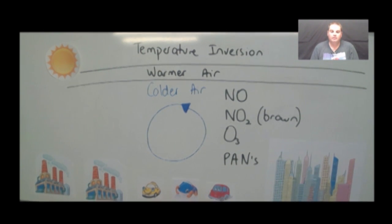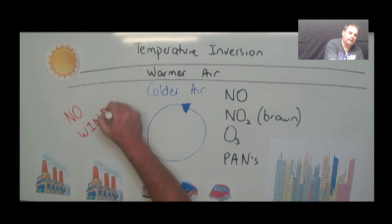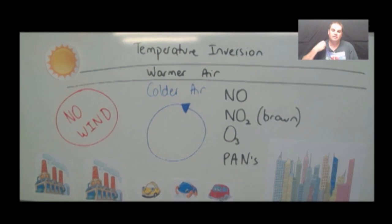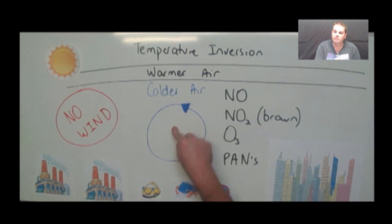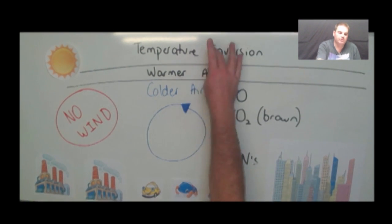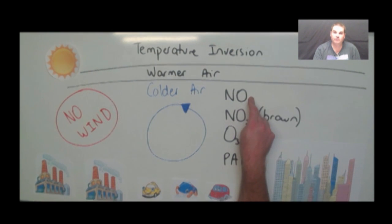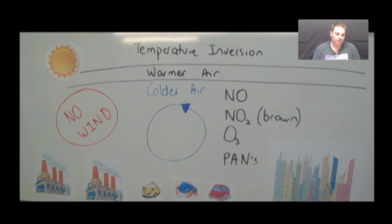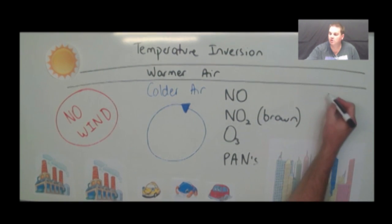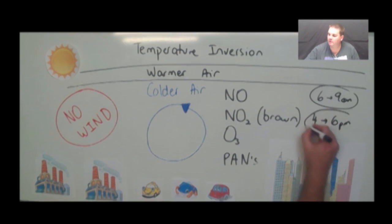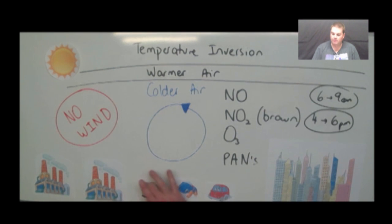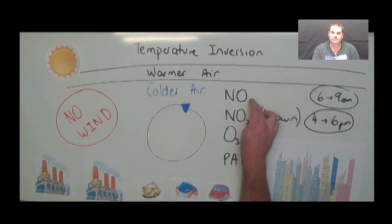If this air keeps circulating and isn't broken up, we then form our ozone and our PANs as well. The other real key condition we need is no wind — no wind means we don't get the air to mix together. If wind happens, it breaks up your temperature inversion and you no longer get this build up of pollutants. So if you have a temperature inversion and no wind, you allow nitrogen monoxide to form in greater concentrations, which allows nitrogen dioxide to form, which can form your ozone and your peroxyacetyl nitrates. In Adelaide, photochemical smog is most commonly seen between about 6 and 9 a.m. and about 4 and 6 p.m. — peak hour traffic, when you've got the most cars on the road emitting the most nitrogen monoxide.